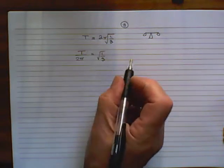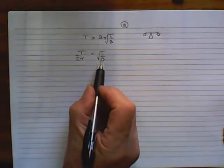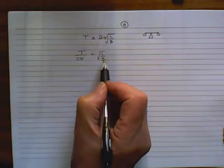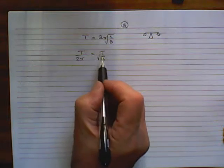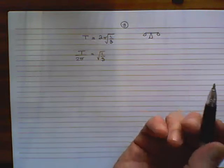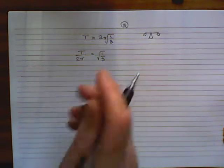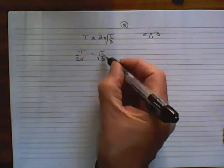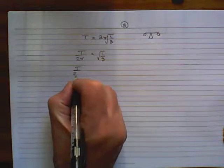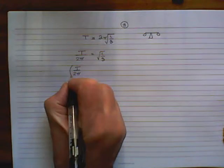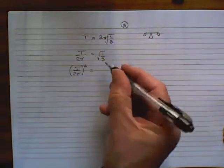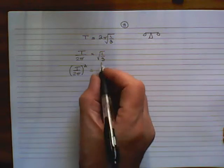So far, so good. But this is the square root of L over G. I've got to get at this G here. So what we need to do is to square both sides. Because if you square a square root, the square root is going to be just the number that's there. So let's square both sides.